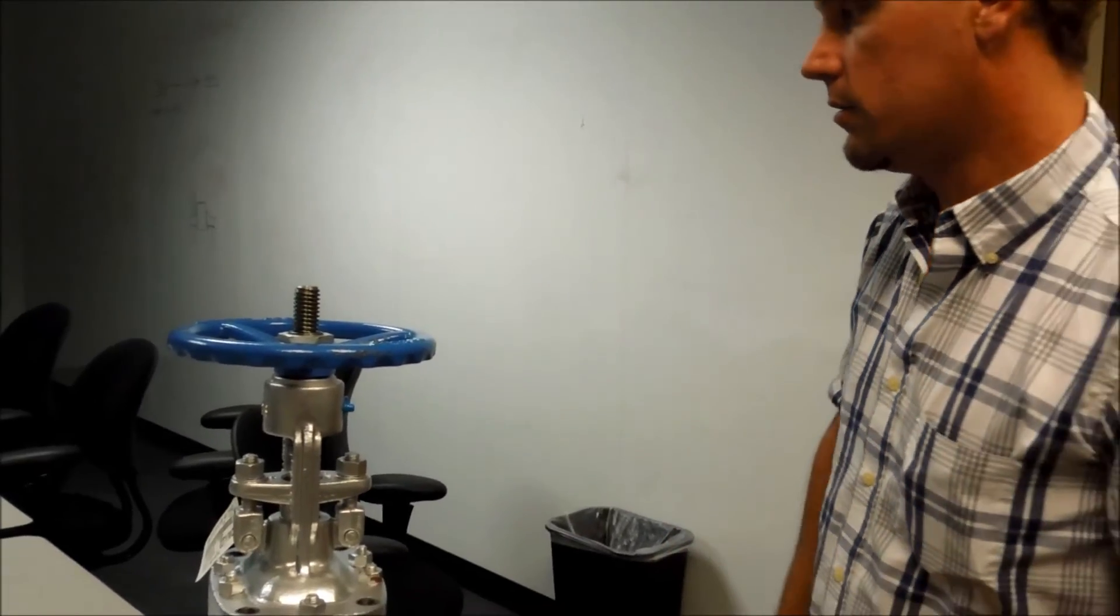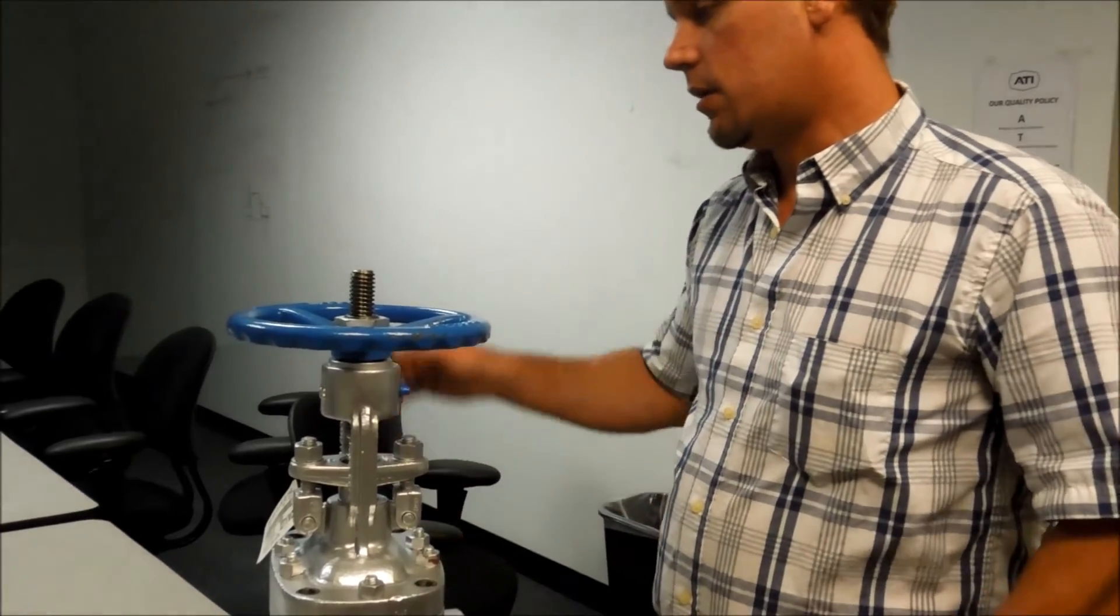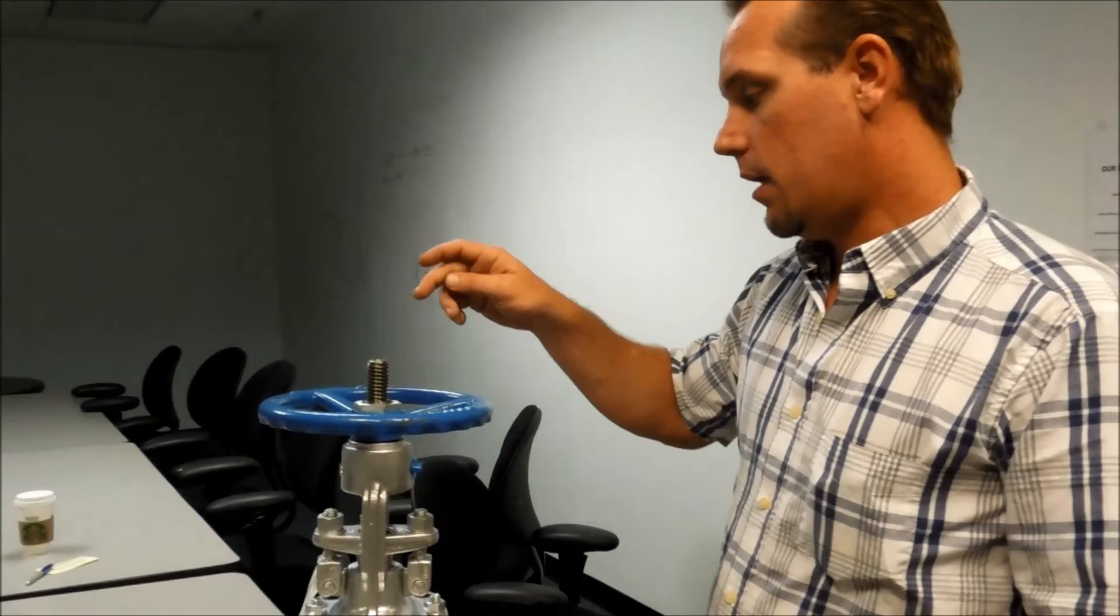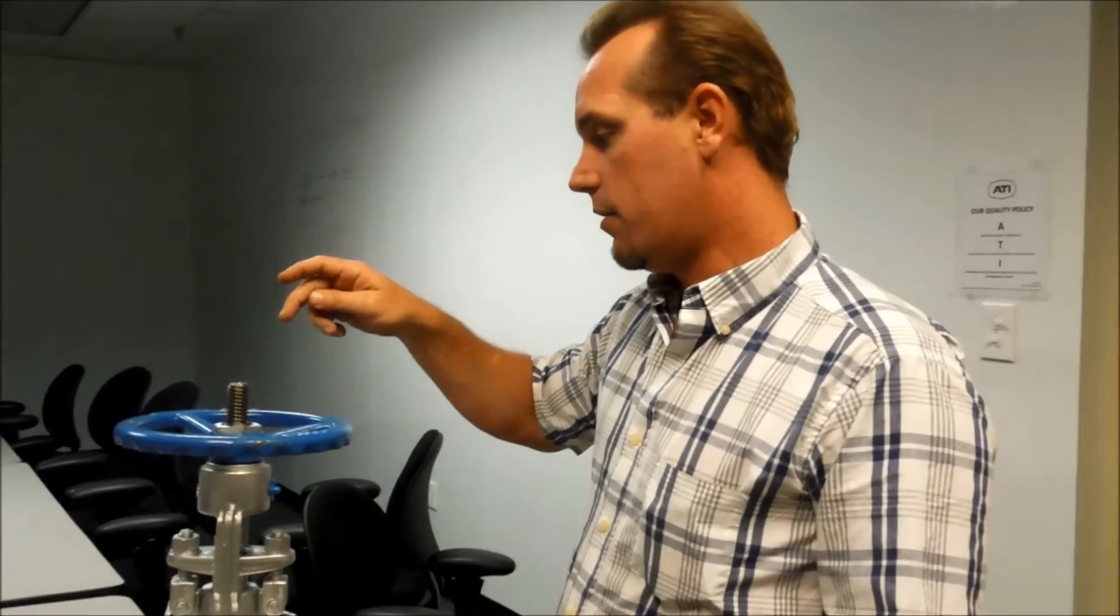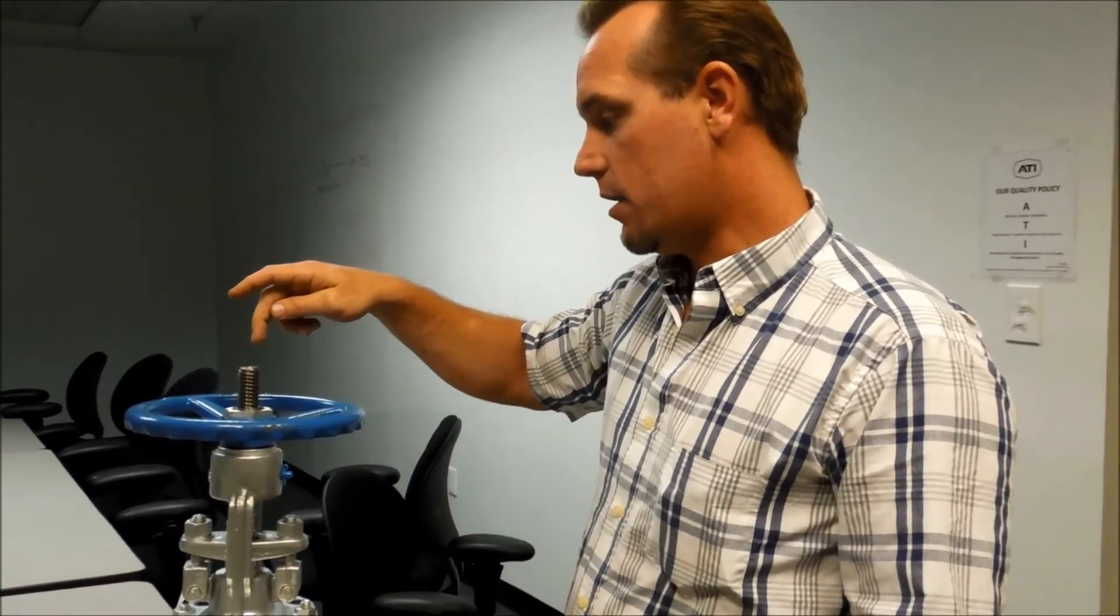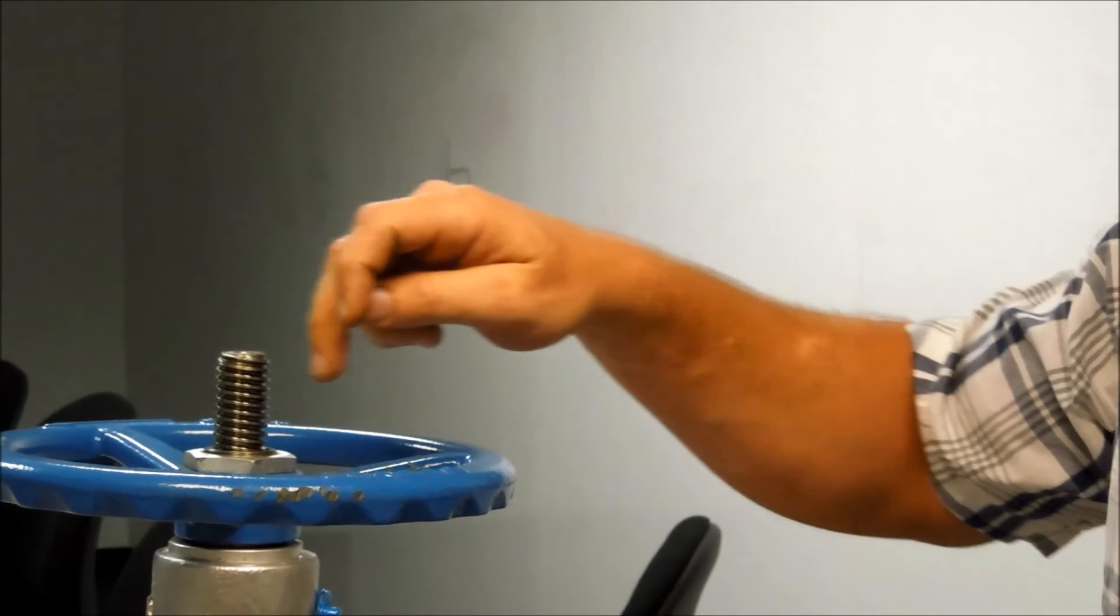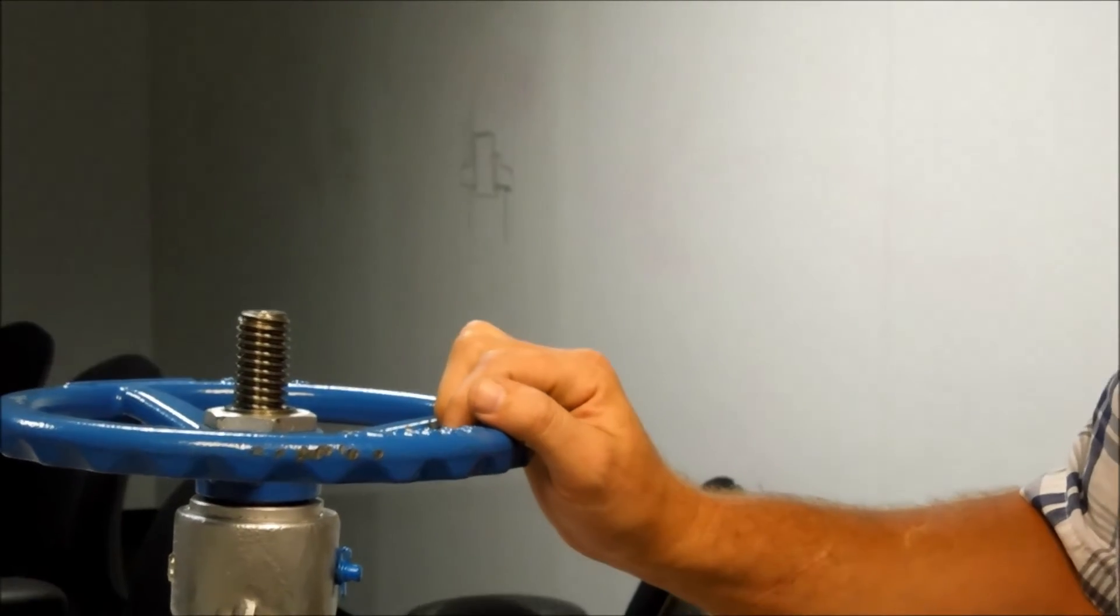A way to determine those two things is you can visually look at the valve stem. And if the threading, as the threading goes down, it is going in a left hand manner, that is a left hand thread. Going in a right hand manner, that is a right hand thread.